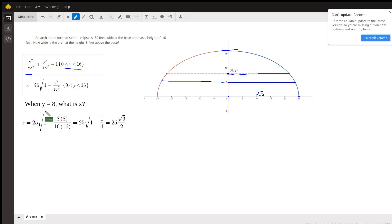So when y is 8, what is x? We'll put 8 in for y. And I wrote this as 8 times 8 over 16 times 16 to make it easier to see why this is 1 fourth. 1 minus 1 fourth is 3 fourths. The square root of 3 fourths is going to give me the square root of 3 over 2. Of course, I'm multiplying by that 25.